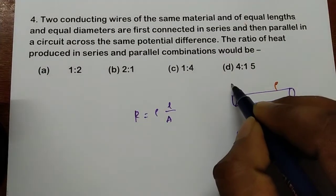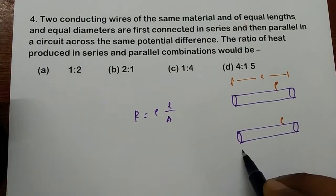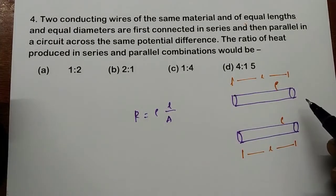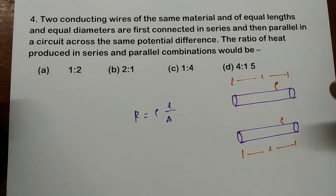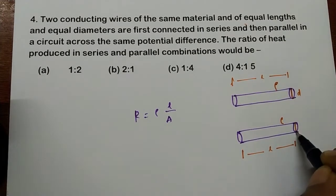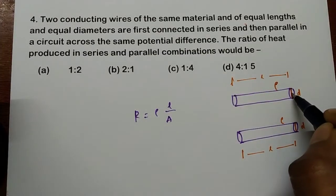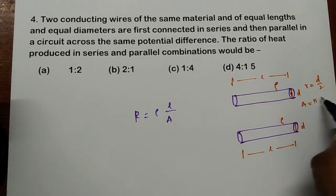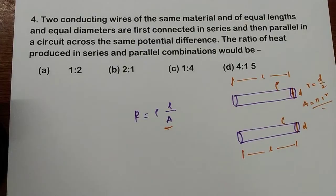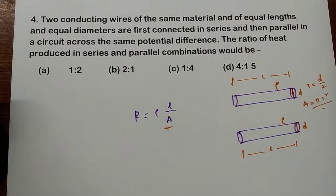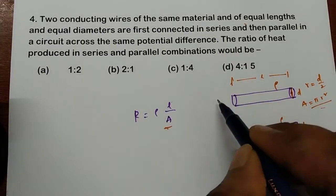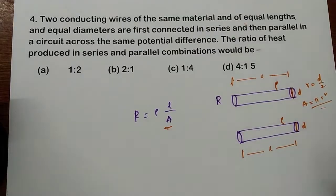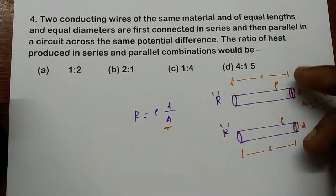And of equal length — whatever length I take for the first wire, let's call it L, the same length goes for the second wire. And of equal diameters — whatever thickness I take, that diameter D is the same for both. D divided by 2 gives radius, so area equals pi R squared. This means both wires are exactly identical conductors with the same rho, L, and A. So if this wire has resistance R, the second wire also must have resistance R — both wires have the same resistance.